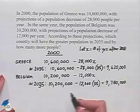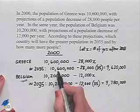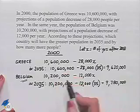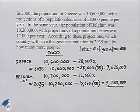So it turns out that according to these projections, in the year 2035, Belgium — which started off with fewer people — actually ends up with a greater population at that point in time.